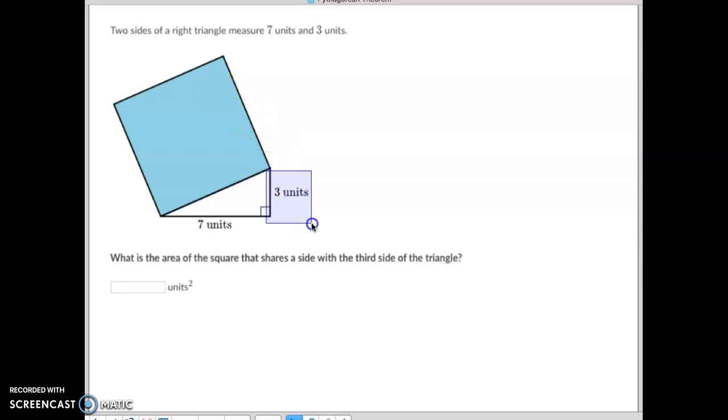So we just simply take our a squared, 3 squared, and we're going to square that, which is 9. We're going to take our medium side 7 squared, which is 49. We add the 9 and the 49 to get 58, which means the area of this square right there is 58. It's that simple.